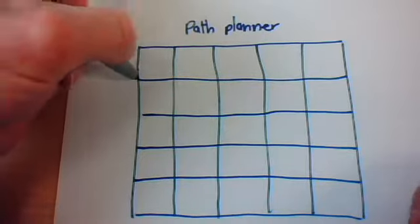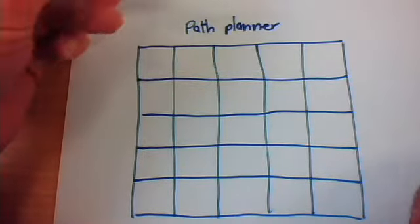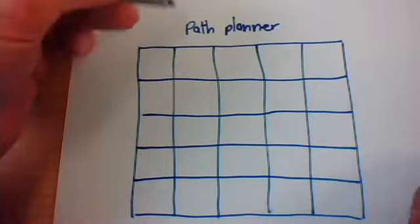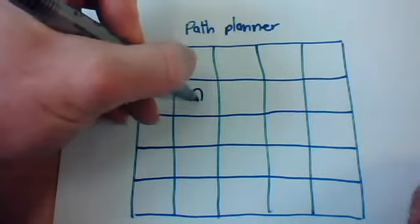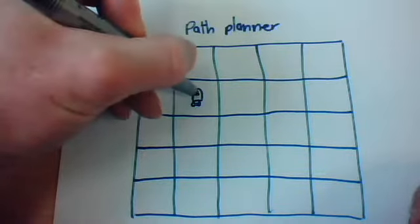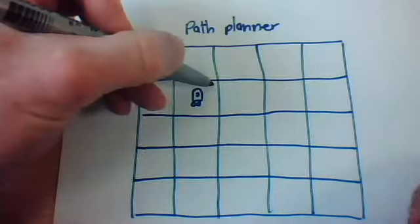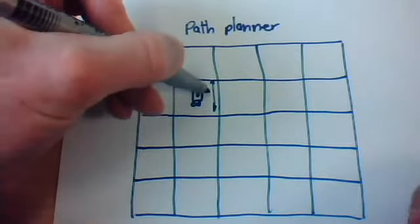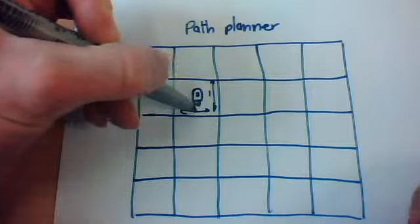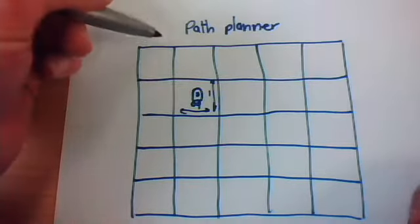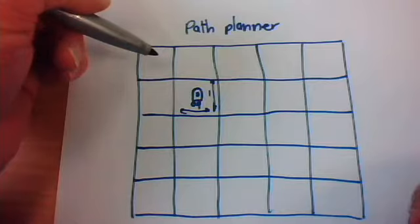The idea is the world where the robot is going to be running around is divided into little square blocks. We could say that each of these square blocks is, for example, one meter by one meter square. So the whole world that the robot knows is split into one meter squared blocks.